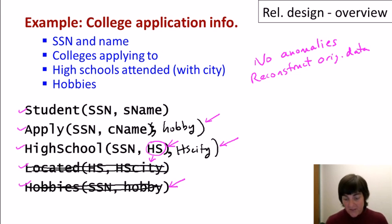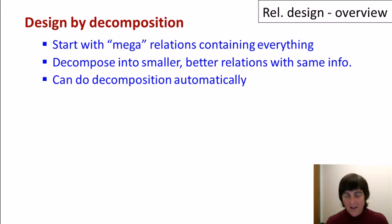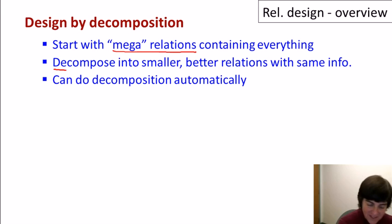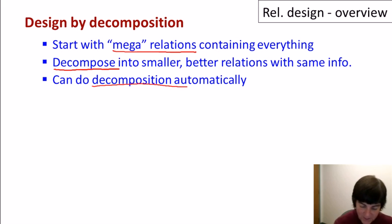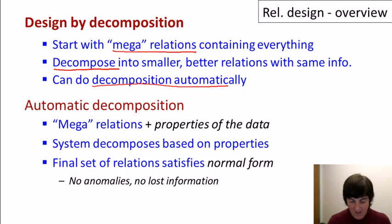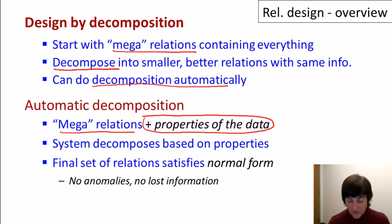The basic idea of what we're going to do is design by decomposition. Specifically, we start by creating mega-relations that contain attributes for everything we want to represent in our database, then decompose those mega-relations into smaller ones that are better but still capture the same information. Most importantly, we can do this decomposition automatically. In addition to the mega-relations, we formally specify properties of the data, and the system uses those properties to decompose the relations and guarantee that the final set satisfies what's called a normal form.